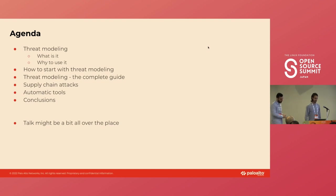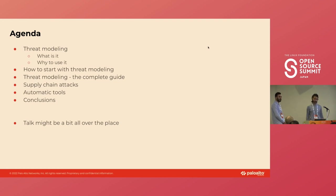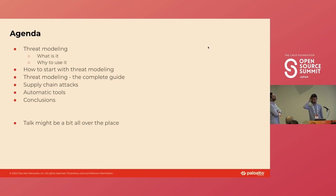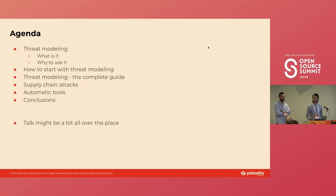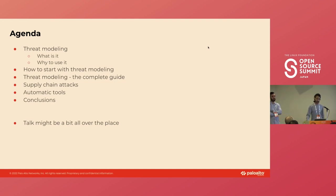Let's quickly cover the agenda. We'll start with threat modeling — what it is, why to use it, why you should care. Then we'll go over how to actually start with threat modeling, followed by supply chain attacks — what they are, a few examples, why they're important. Then we'll cover some possible mitigations using automatic tools, their pros and cons. Finally, we'll conclude. This talk might be a little all over the place, because there are many topics we think are important when one starts with threat modeling, and we try to touch a little bit about everything.